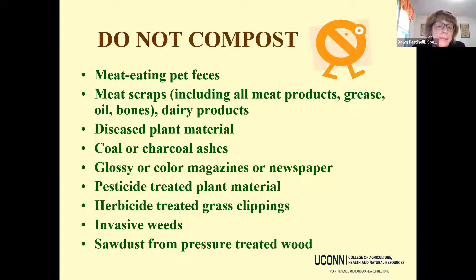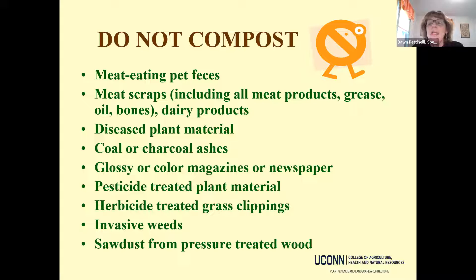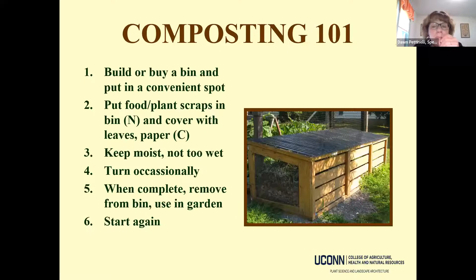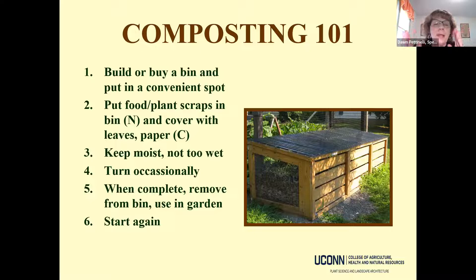Every cell — plant or animal — contains both carbon and nitrogen. You want aerobic decomposition, so you need oxygen — which is why we turn the pile. Microbes need water. Decomposition is faster when warmer. Microorganisms are everywhere — the average person carries about three pounds of microbes on and in them — so you don't necessarily need to add any microbes to have a successful compost pile.